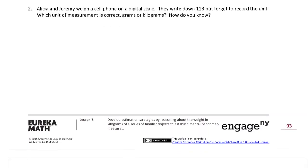Now we have Alicia and Jeremy weigh a cell phone on a digital scale. They write down 113 but forget to record the unit. We always have to write down the units, don't we? We're counting always something in math. It's important to keep track of what we're counting.